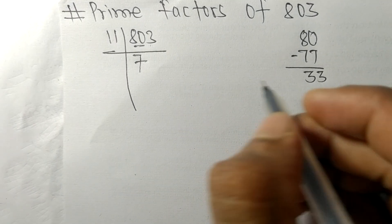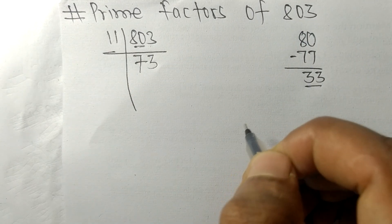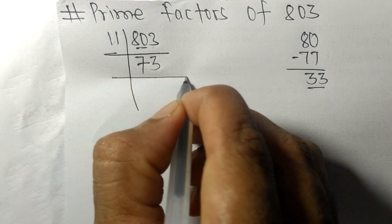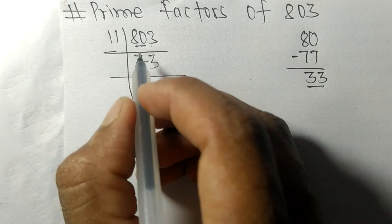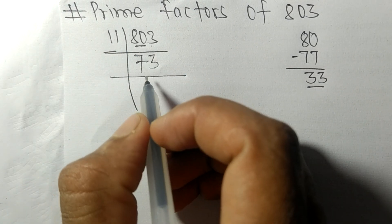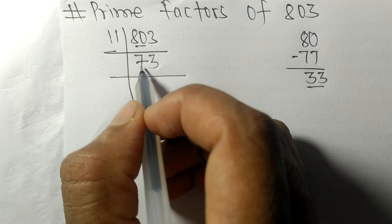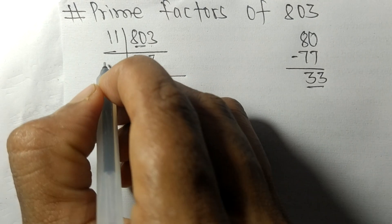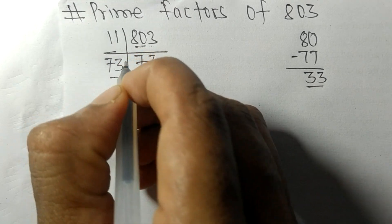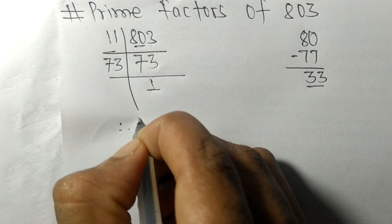11 times 3 means 33. So now we got 73 on dividing 803 with 11. 73 is a prime number, so it is exactly divisible by 73 only, and on dividing we get 1.